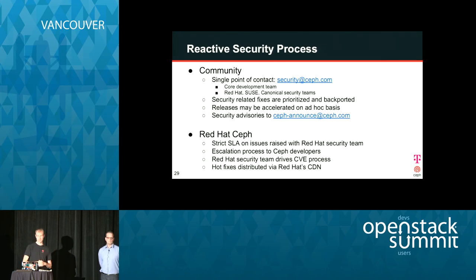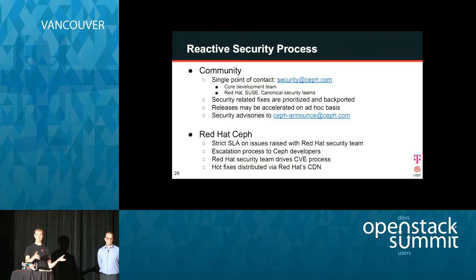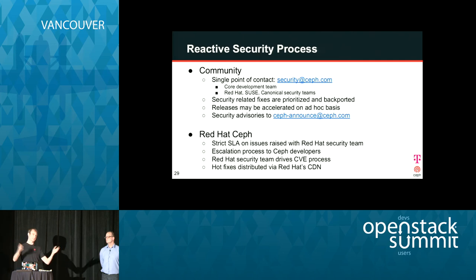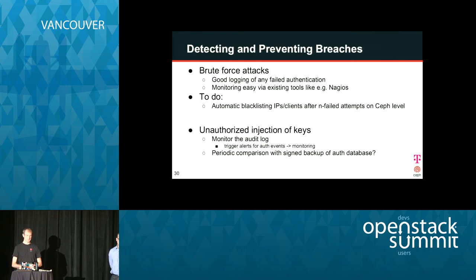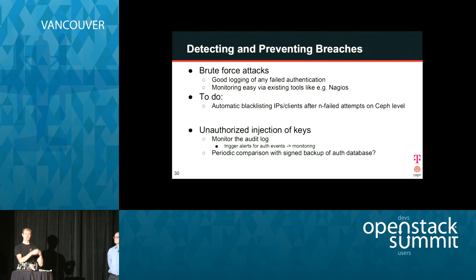On the product side, distributions like Red Hat have a dedicated team of security professionals who deal with these issues. They drive the CVE process and make sure it gets escalated, all the boxes are checked, tests done, and then push fixes out to customers quickly. You can see this in action with flaws like Heartbleed — distributions really shine in dealing with those situations. You can also implement general practices that allow you to detect and prevent breaches in the first place, such as detecting brute force authentication attempts and implementing mechanisms on the Ceph side to blacklist such attacks.